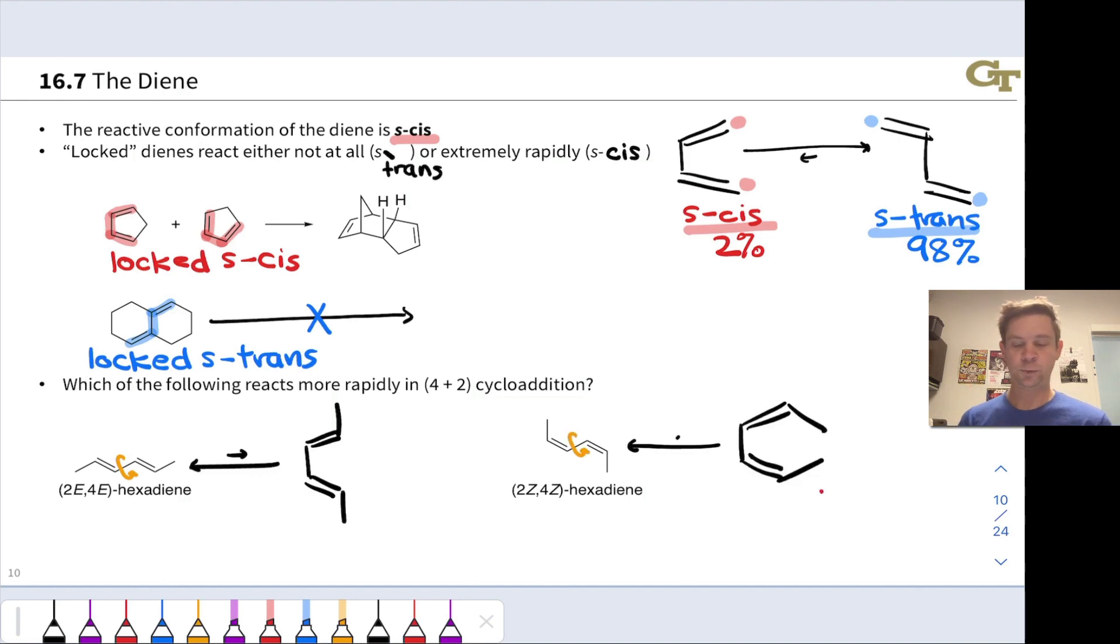If we try to do the same thing with the other substrate, we end up in a situation where the two methyl groups are now pointed directly at each other. And this creates a problematic destabilizing steric interaction between those methyl groups. They are in each other's faces and bumping right into each other. So this destabilizes the S-cis conformation of this molecule on the right.